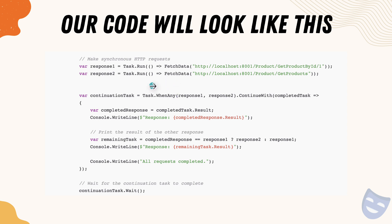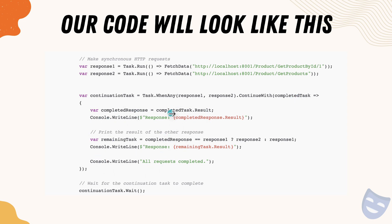After the task.run operation completes, we are going to use the task.WhenAny method. There are many different built-in methods available in task that can perform many different operations. So we're going to say task.WhenAny of response1 or response2 — when any of them completes, continue with the completed task and write the result. You remember the result property from our last lecture; we're going to print the response using completedTask.Result.